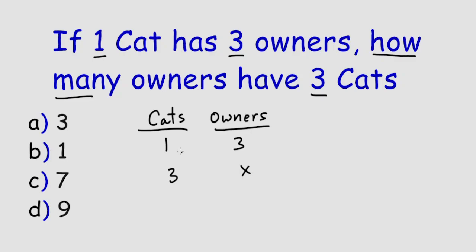So we have three cats for three owners. Cross multiply here and the unknown cross multiply here. So we have 3 times 3 is equal to 1 times x. So x is equal to 9.